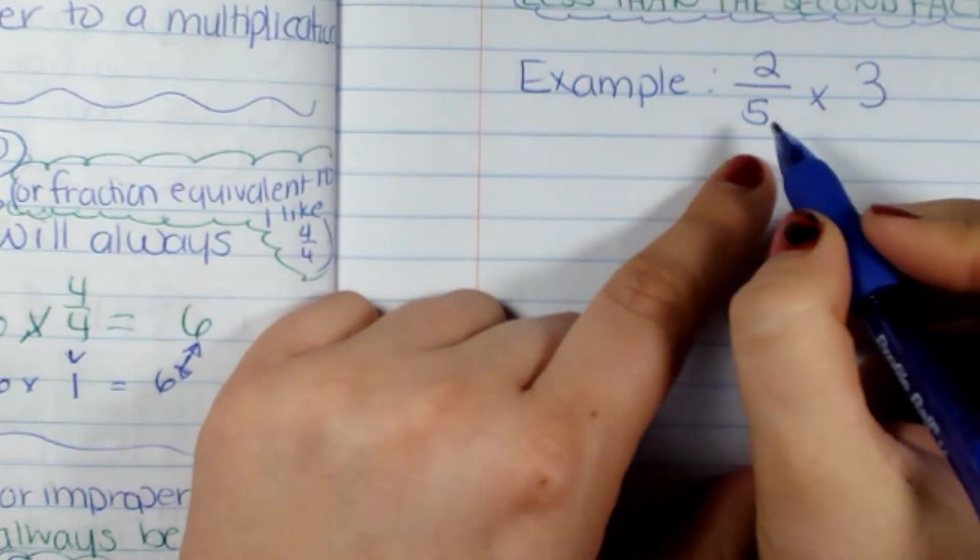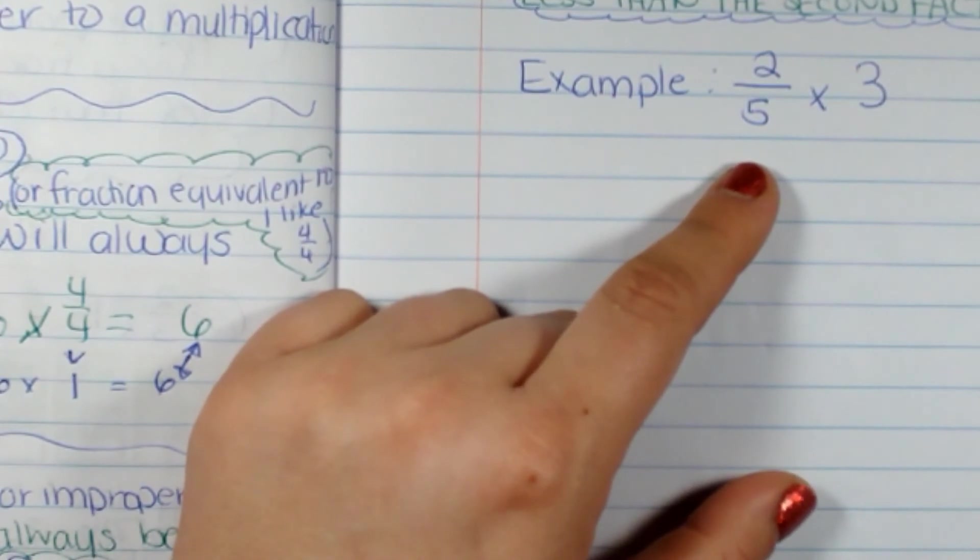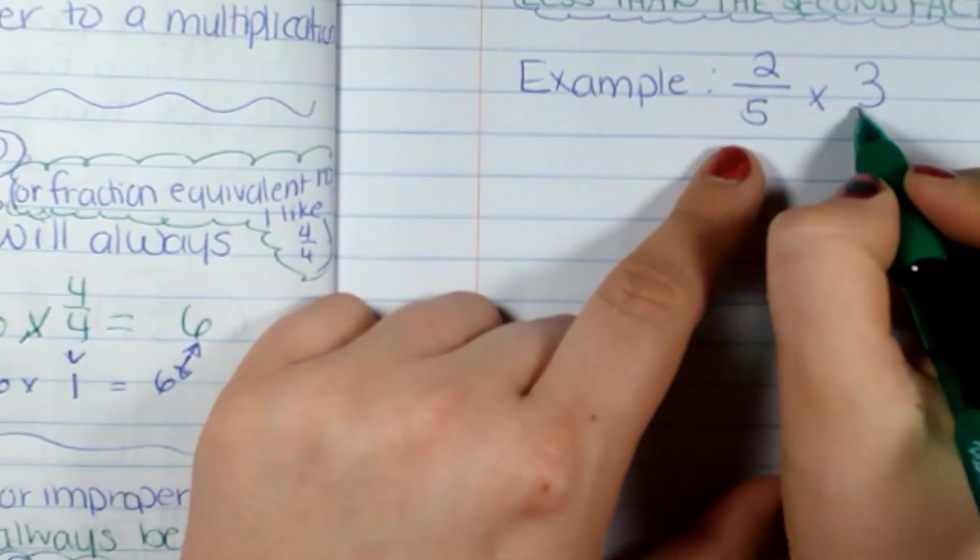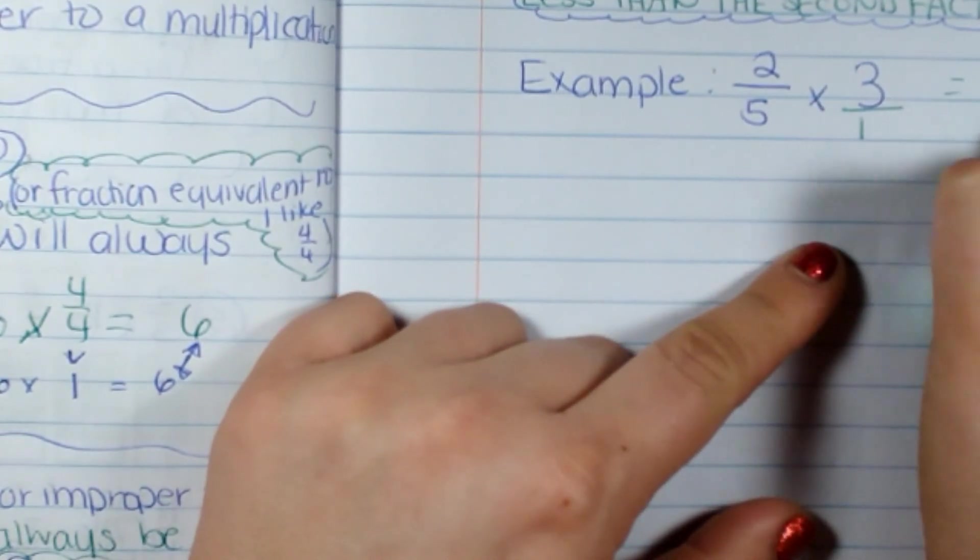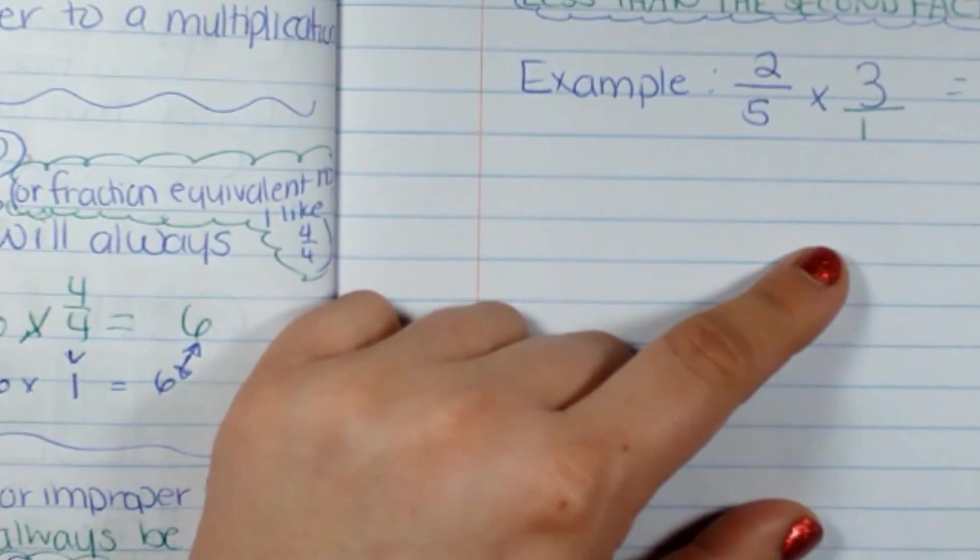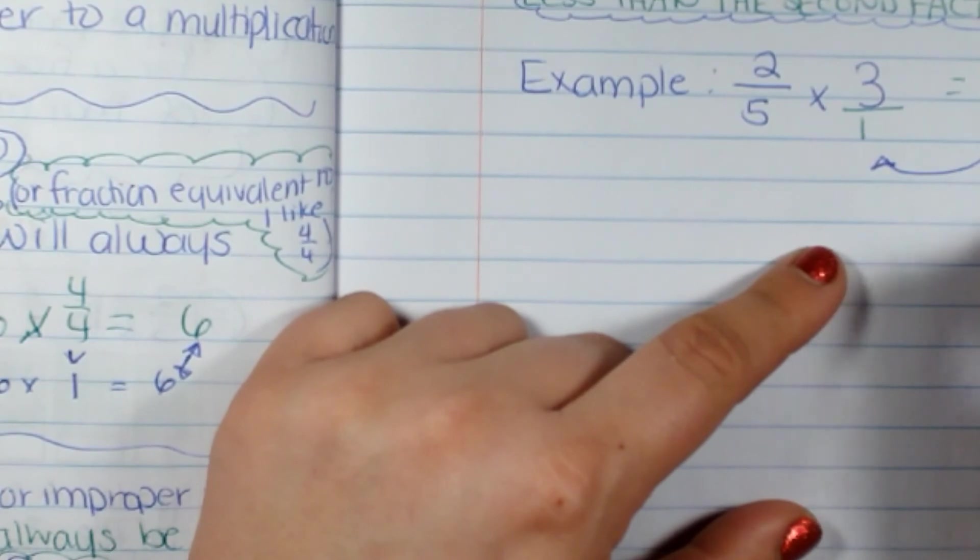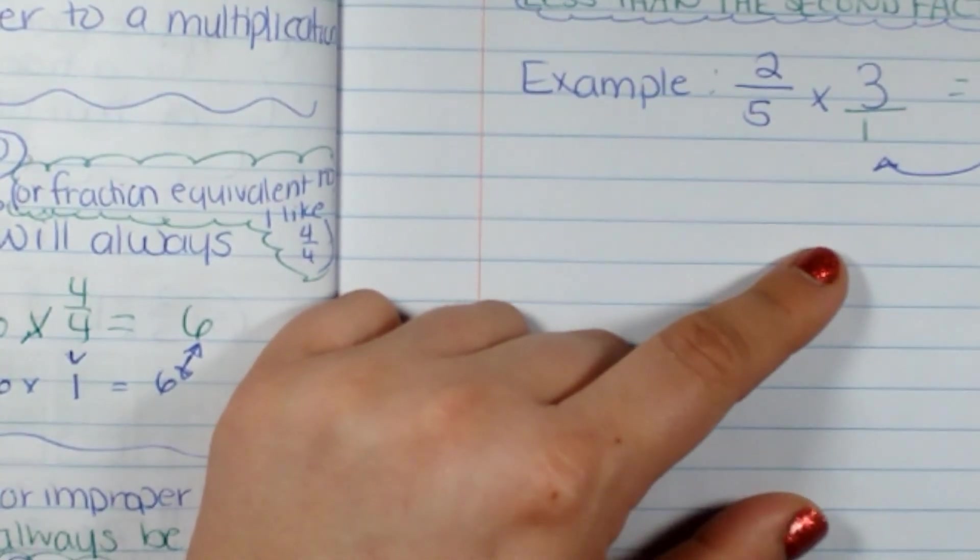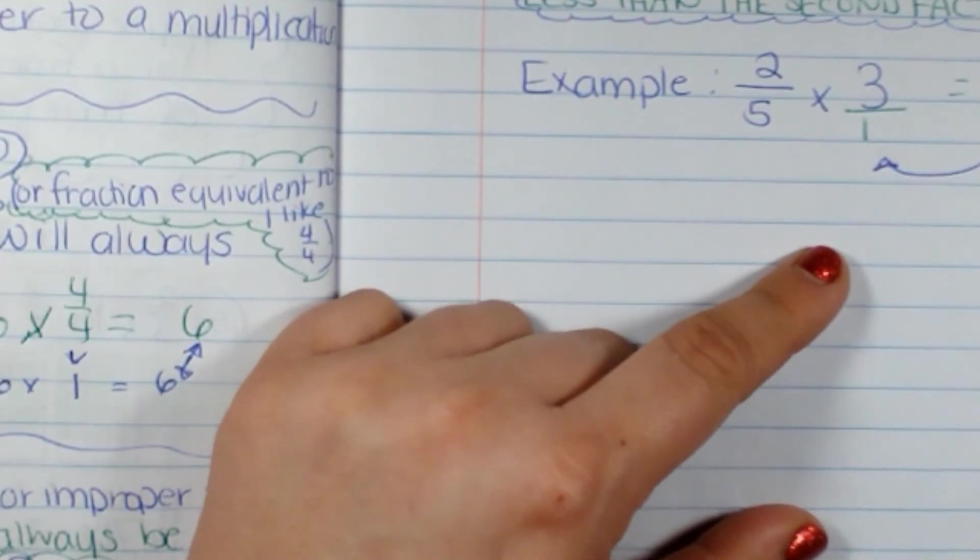Now if I do it with a fraction as well, it's going to do the same thing. We just haven't done fractions yet. So when I multiply across, six-fifths, this answer is going to be less, should be less than three. And this would be one and one-fifths. One and one-fifths is less than three.